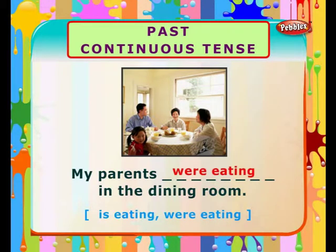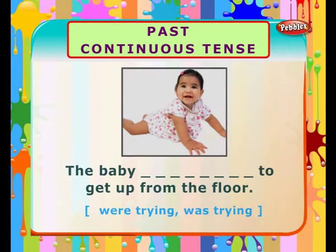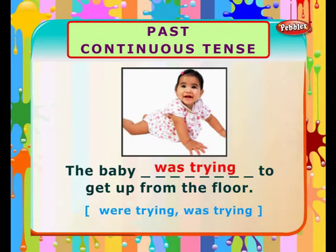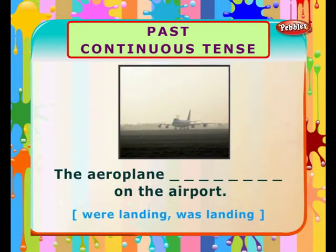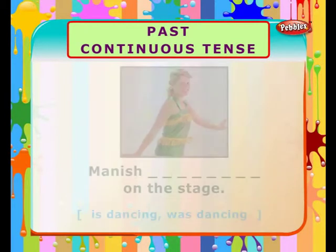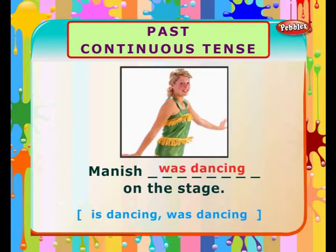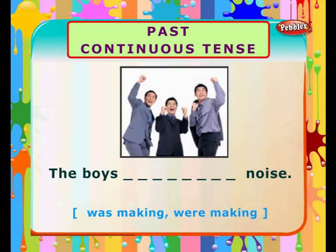The baby was trying to get up from the floor. Sunita was speaking to her father. The aeroplane was landing on the airport. Manish was dancing on the stage. The boys were making noise.